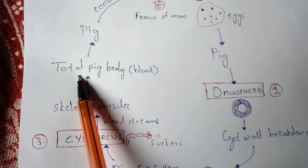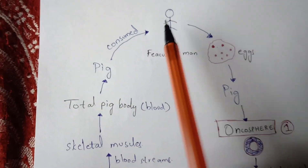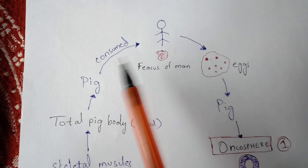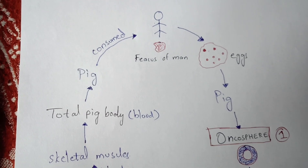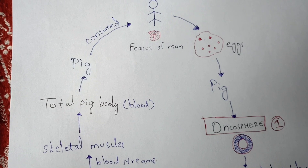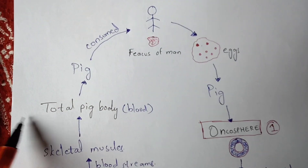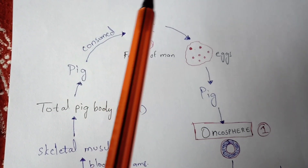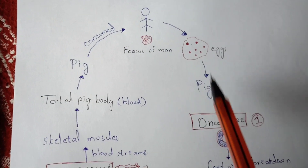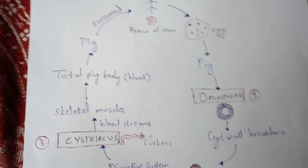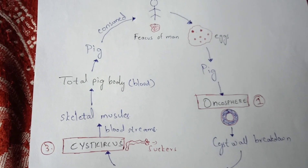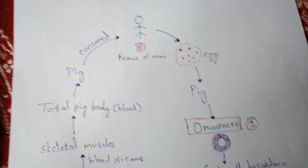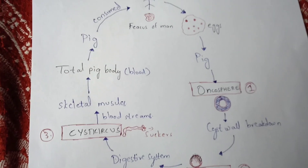When humans consume the pig — specifically its muscles — the larva enters the human body again. The human then releases fecal matter containing eggs produced by the tapeworms. These eggs are again consumed by pigs, entering their digestive system and bloodstream, affecting their skeletal muscles, which are again eaten by humans — and thus the cycle continues. This is the complete life cycle of Taenia solium.